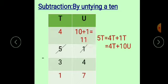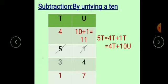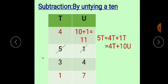Children, you can directly write 11. Now we can easily subtract 4 from 11. Keep 4 in your mind and start forward counting till we get 11: 5, 6, 7, 8, 9, 10, 11 — so the answer is 7. After that, move towards the tens place. 4 minus 3, we get 1. So the answer is 17. This is the method of subtraction by untying a 10, meaning we borrow the digit from the tens place.